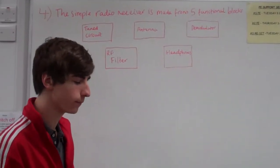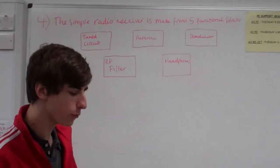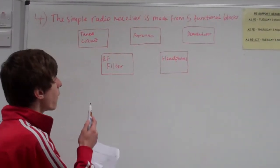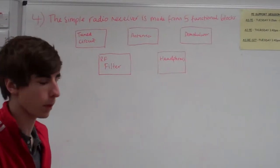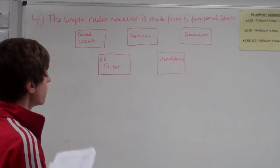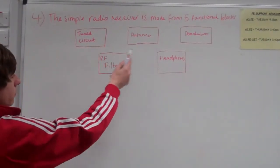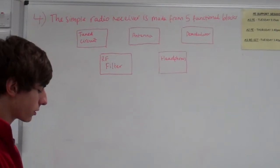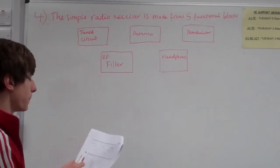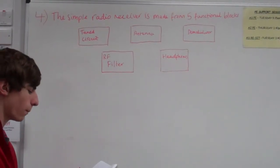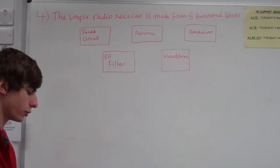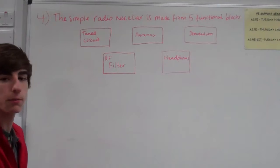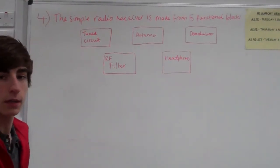Question four. A simple radio receiver is made from five functional blocks. They give you these blocks already. It will then ask you, in the space below, draw a block diagram to show how these blocks are connected to make a simple radio receiver.